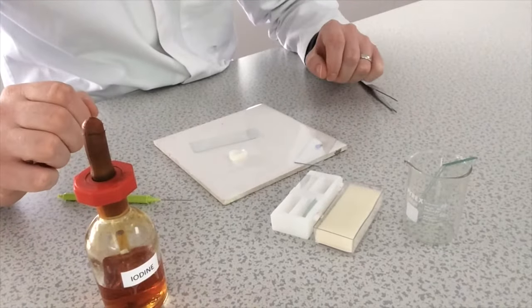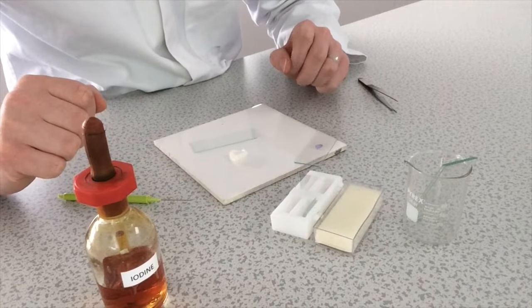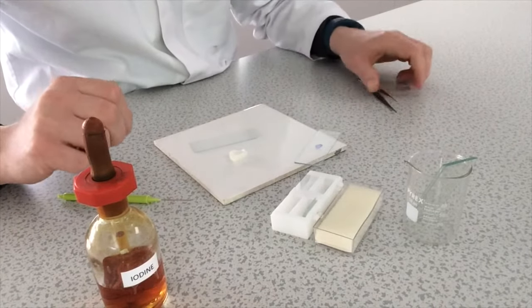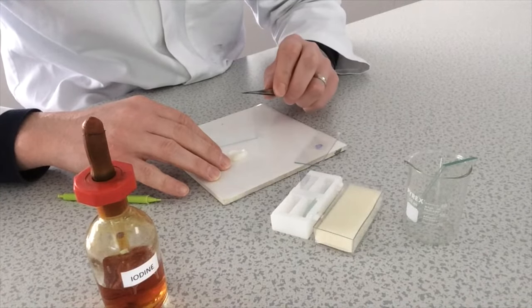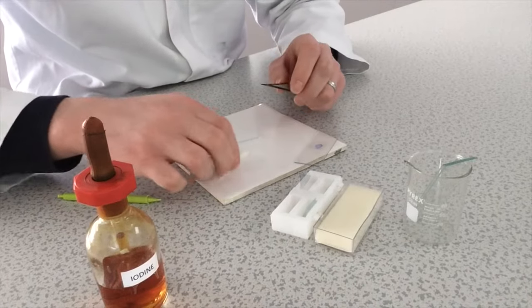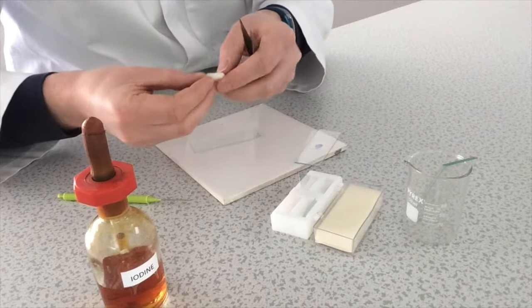So I'm now going to prepare my plant cell, onion cell slide. So I've got a freshly cut piece of onion and what I'm going to do then is using some forceps I'm going to peel a thin layer of the epidermis from the inside of this freshly cut onion.